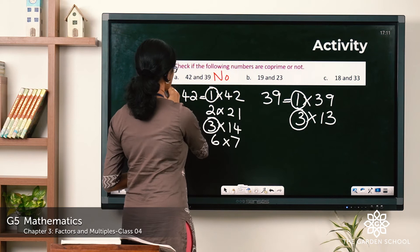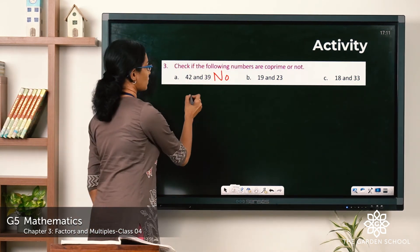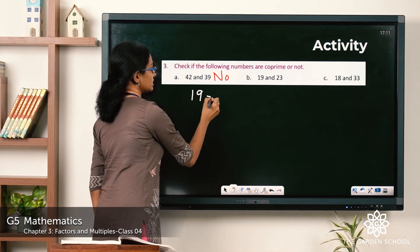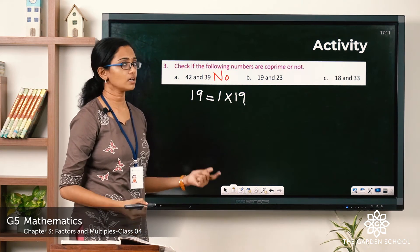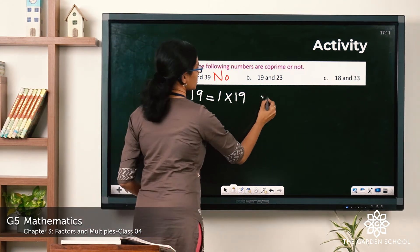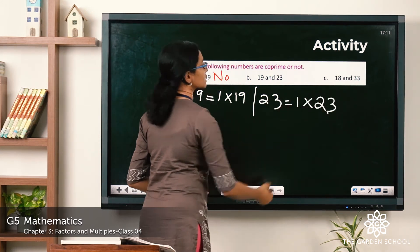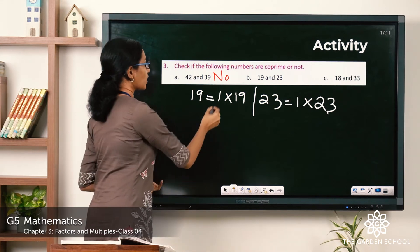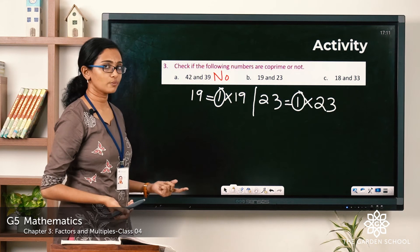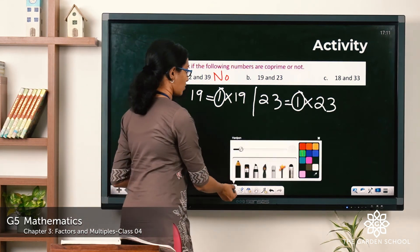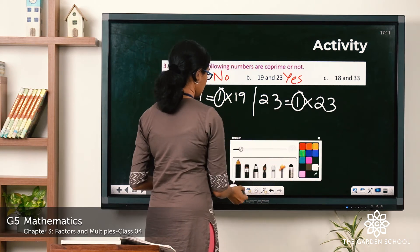Now let's see question b: 19 and 23. The factors of 19 are 1 and 19 — any more? No. What about 23? 23 is 1×23 — any more factors? No. So the only common factor of 19 and 23 is 1. Are they co-prime? Yes, they are co-prime numbers. You can write Yes.